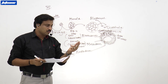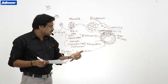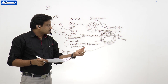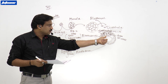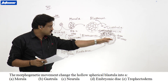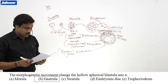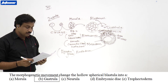The outer trophectoderm becomes extra-embryonic membranes — amnion, chorion, yolk sac, and allantois — while the inner part, the inner cell mass, is converted into the embryo. This is how the rearrangement happens during embryo development. Therefore, the answer to the question is option B — gastrula.